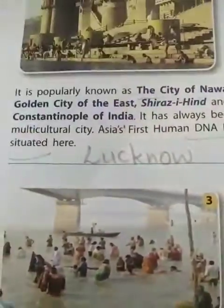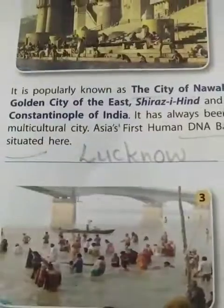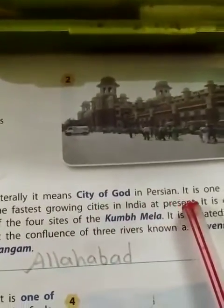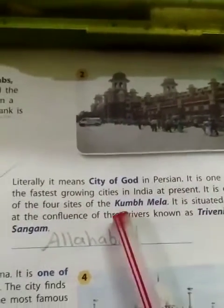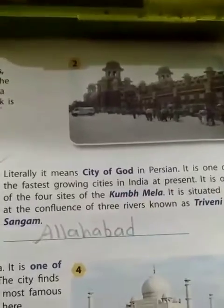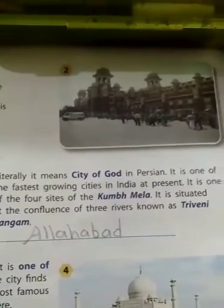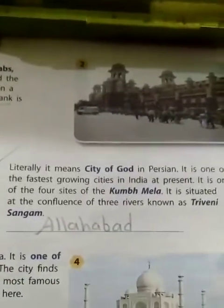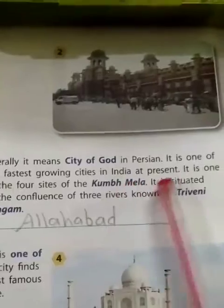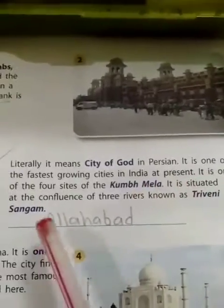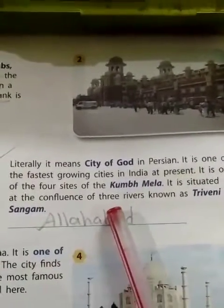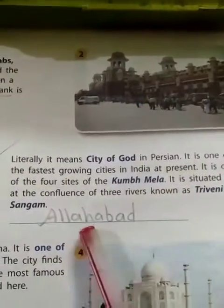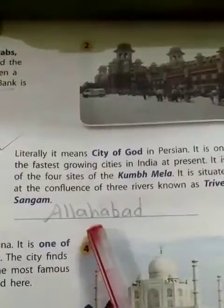Now I am describing this one. Literally, it means 'city of God' in Persian. It is one of the fastest growing cities in India at present. It is one of the four cities of Kumbh Mela and it is situated at the confluence of three rivers, known as Triveni Sangam. It is Allahabad.